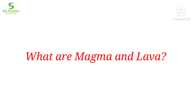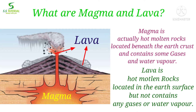Here we must know the difference between magma and lava. When molten rocks are located beneath the earth's crust and contain some gases and water vapor, then they are called as magma. But when magma comes out in the surface of the earth, then they are called as lava. Lava contains only molten rocks and does not contain gases or water vapor.